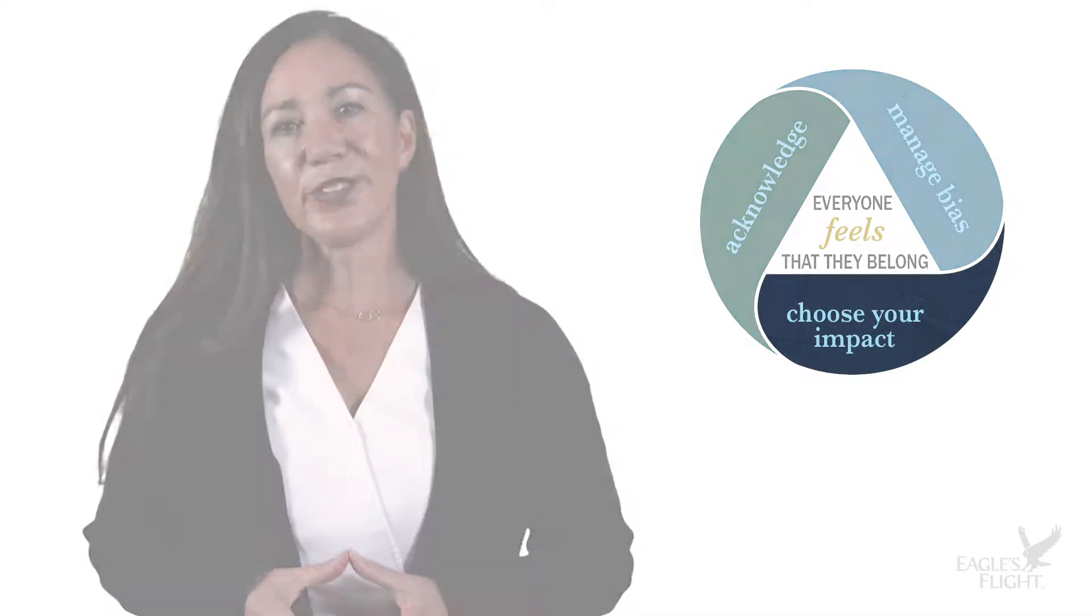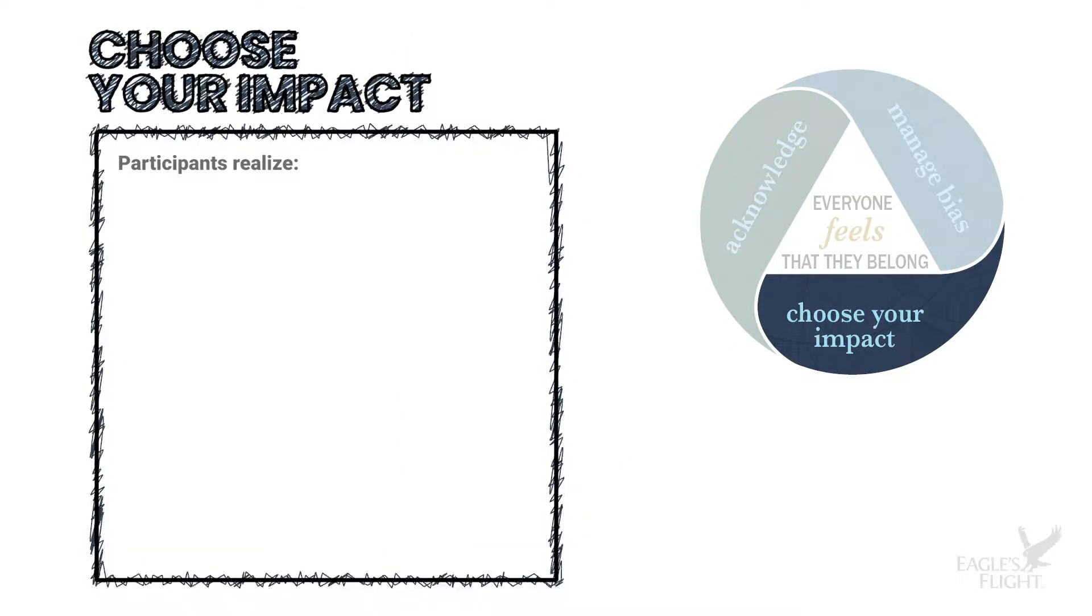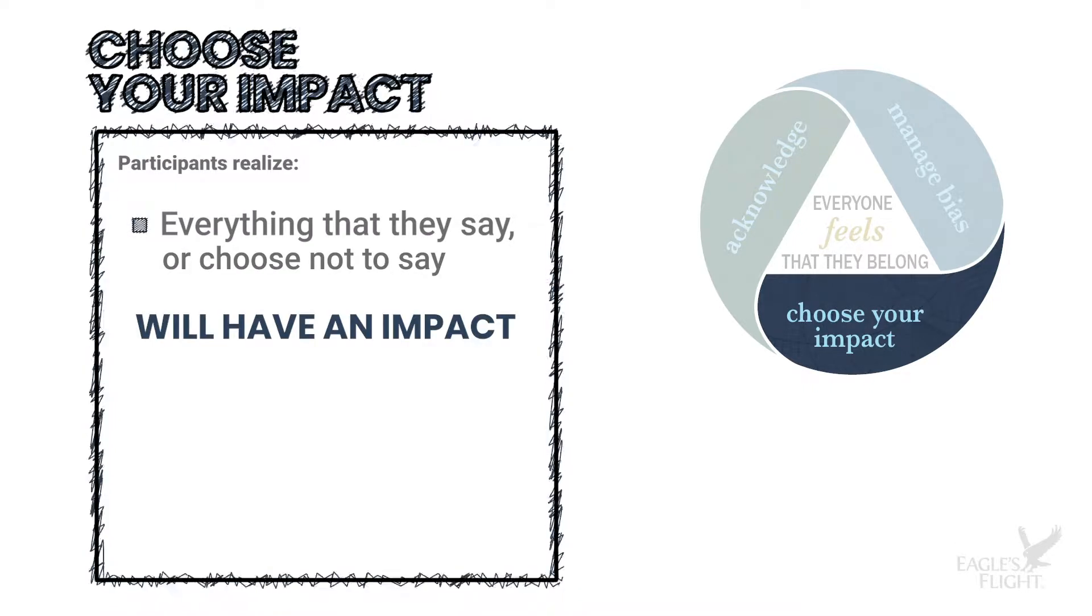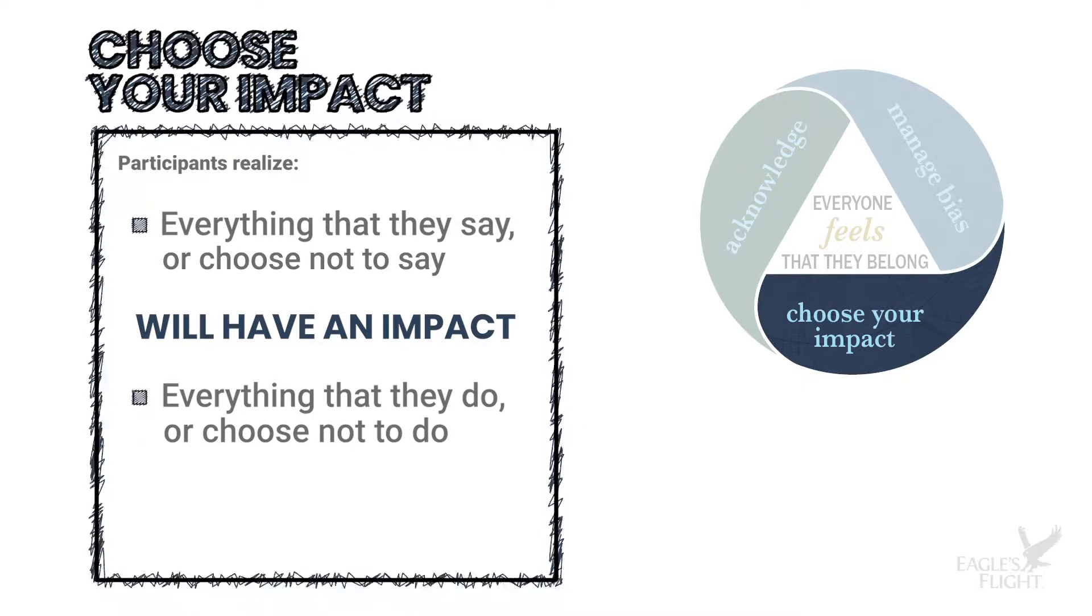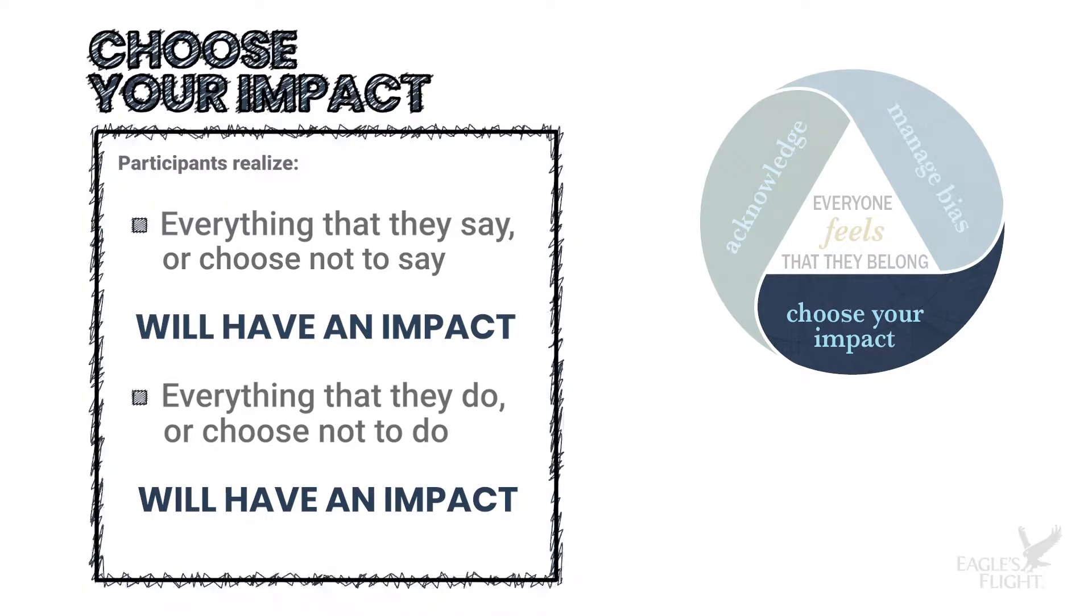The third part of our model is called choose your impact. And ultimately, participants realize that everything that they say or choose not to say will have an impact. Everything that they do or choose not to do will have an impact. So as opposed to being worried about, should I say this?